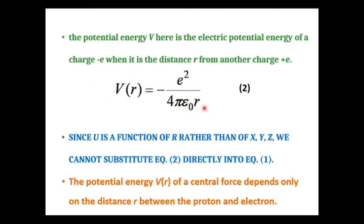The spherical symmetry is present in the system, so we cannot use the potential energy expression directly in the Schrödinger equation as it is. We need to transform it.